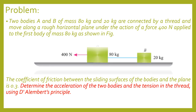Now let us solve one problem. There are two bodies A and B of mass 80 kg and 20 kg connected by a thread, moving along a rough horizontal plane with a coefficient of friction of 0.3, with an external force of 400 N acting on body A of mass 80 kg. We have to determine the acceleration of both bodies and the tension in the thread using D'Alembert's Principle.